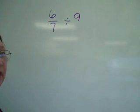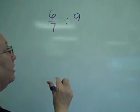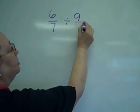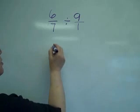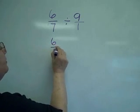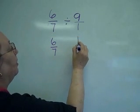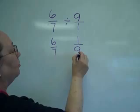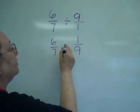Now this one I have the whole number on the right side rather than the left side. So what this is right now, changing it improper, I have 9 over 1. So this then becomes 6 7ths. Leave the first one alone always, and flip the second one or the one on the right over so that you are multiplying by the reciprocal.